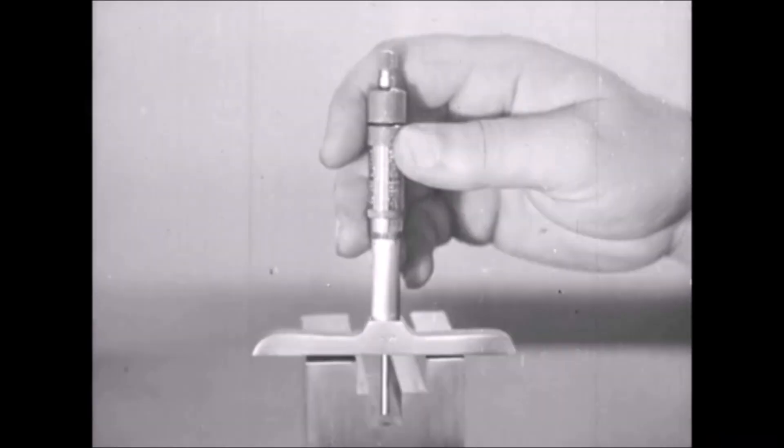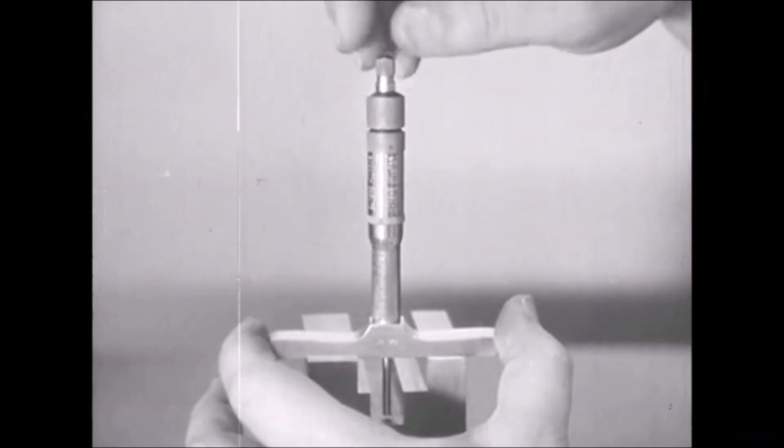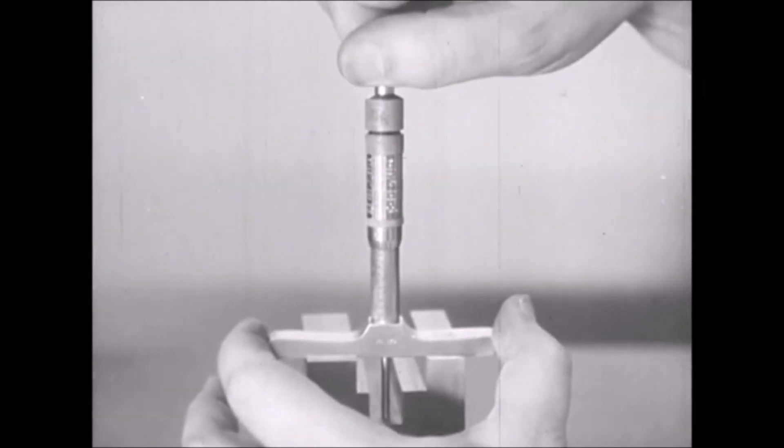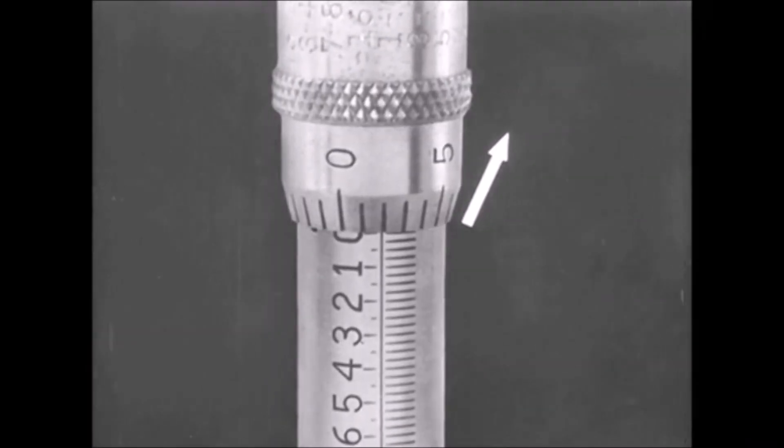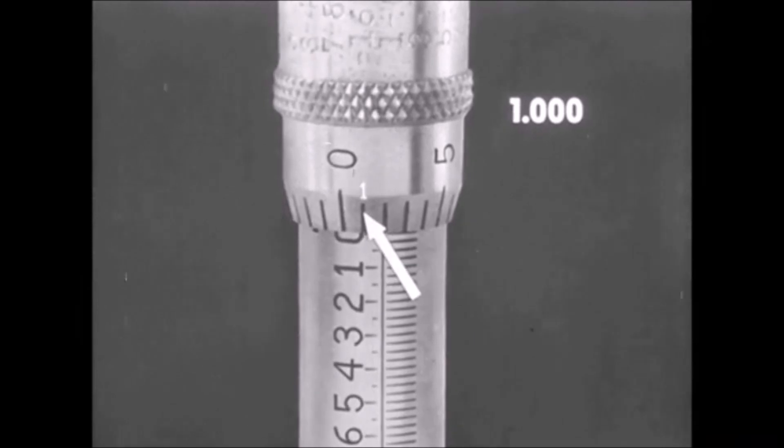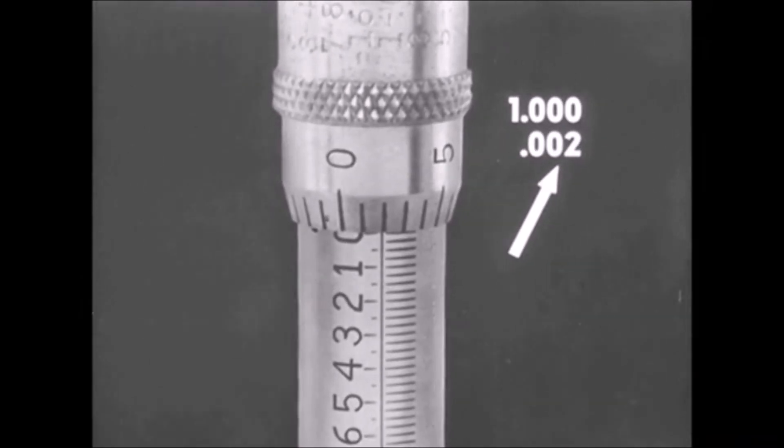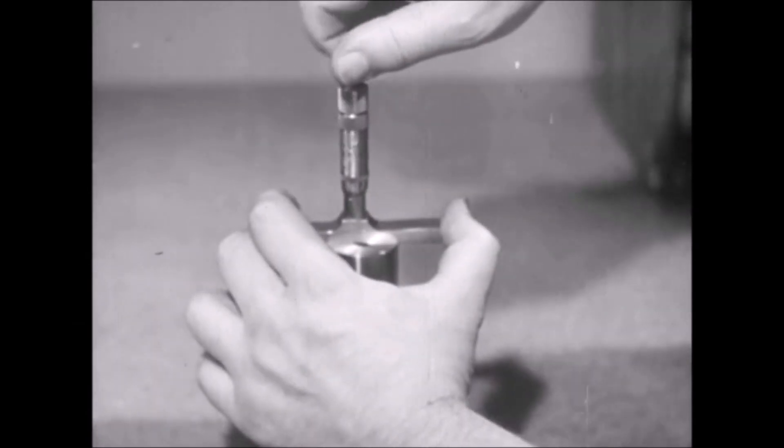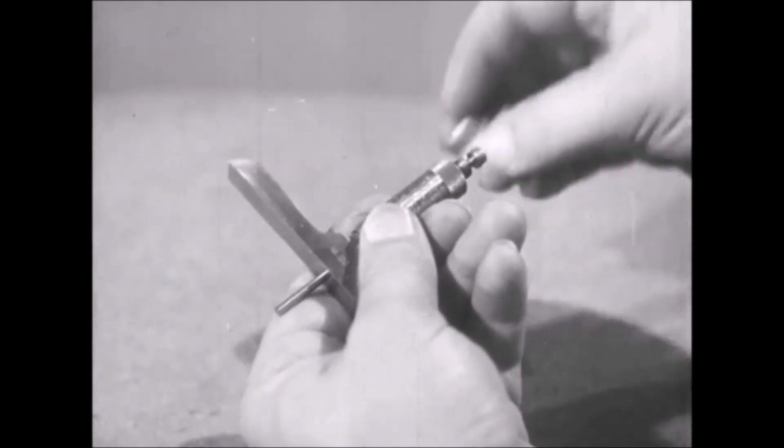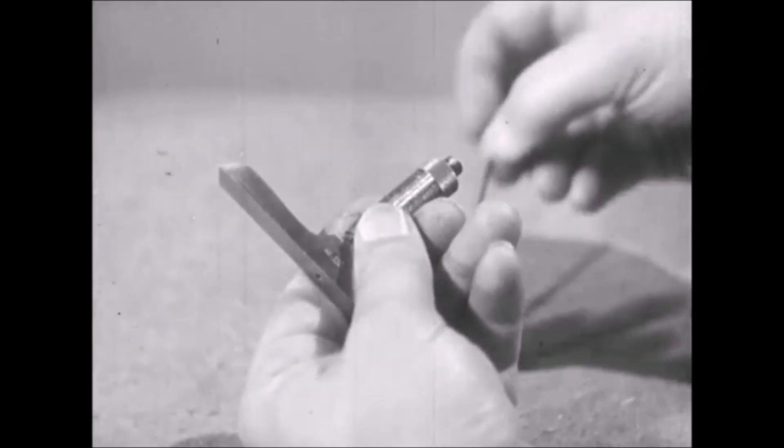Another type of micrometer is used for the accurate measurement of the depth of holes, slots, and other depressions below surface locations. The depth micrometer has a slender rod that reaches easily into small holes and slots. Rods of various lengths adapt the instrument to measuring holes of various depths.